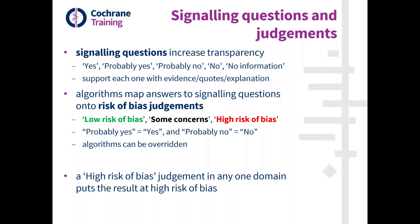We are working on implementing this in an online format where the algorithm will be implemented automatically. However, at the moment you would use the diagrams for that, or alternatively there is an Excel tool available that does implement the algorithms. You will get the default judgment, but the user can decide whether to agree with it or override it — if you are overriding it, you need to provide an explanation why. Most of the time we expect that users will follow the suggestion of the algorithm.